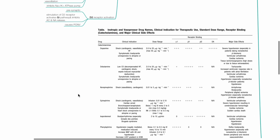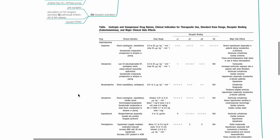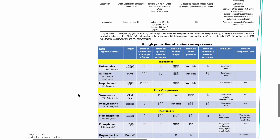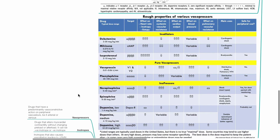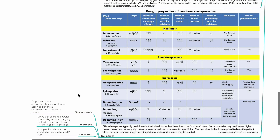This table shows inotropic and vasopressor drug names, clinical indications for therapeutic use, standard doses, receptor binding, and major clinical side effects. A further table classifies various cardiovascular drugs according to whether they have inodilator actions, inopressor actions, or whether they are pure vasopressors.